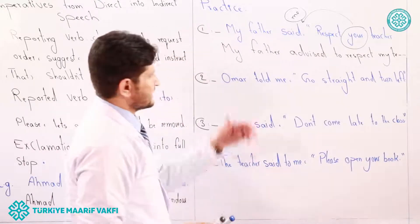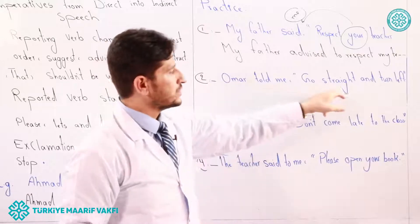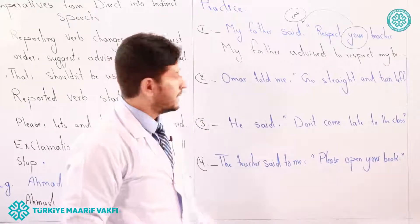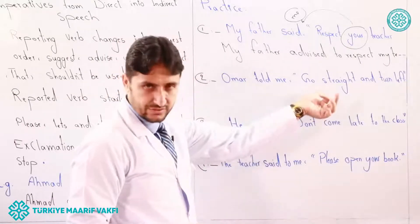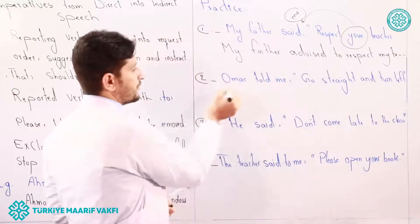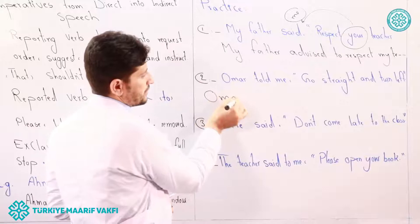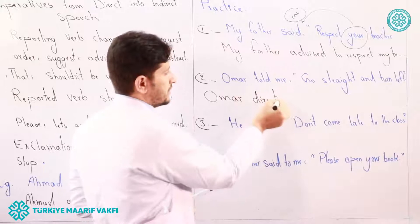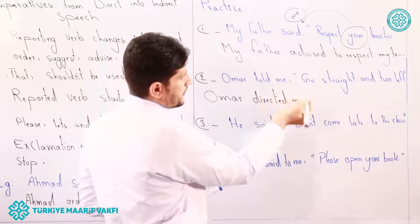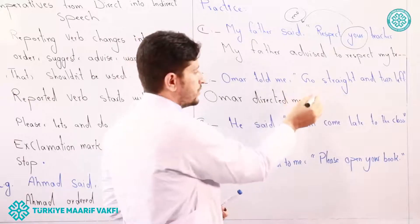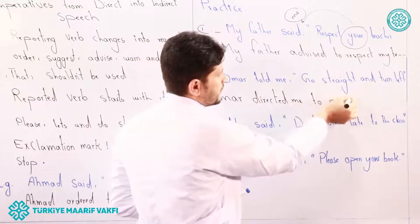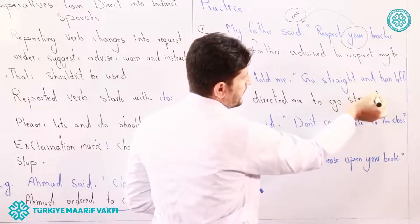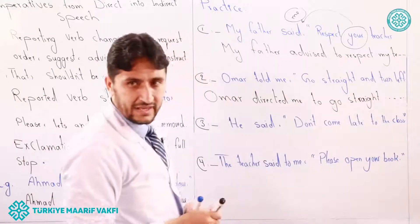'Umar told me, Go straight and turn left.' This shows direction, so we change the reporting verb to 'directed' or 'instructed': 'Umar directed me.' The reported verb starts with 'to': 'to go straight and turn left.' The rest of the sentence remains the same.